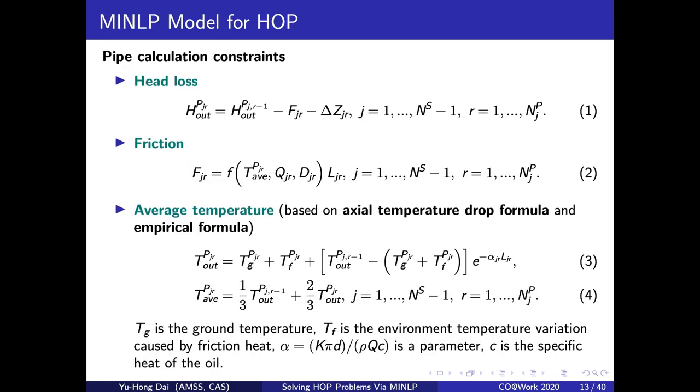Now I show you the constraints in our model. We model the pressure and temperature calculation in the pipe with these four constraints. The difference between inlet and outlet head comes from two parts, friction and elevation difference. The latter one is a constant, and the former one is calculated with constraints 2. Here we formulate the friction coefficient as a nonlinear function F. So constraints 2 are nonlinear equality constraints. Constraints 3 and 4 are the calculation of temperature. They are both linear constraints.